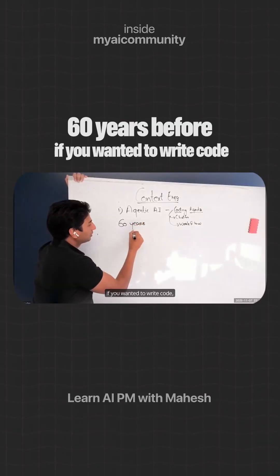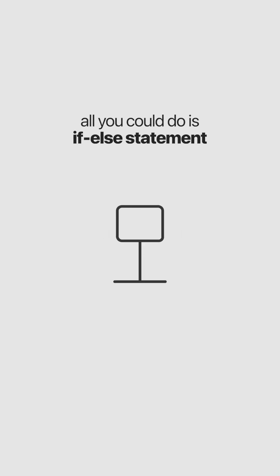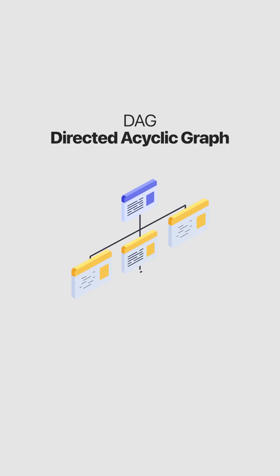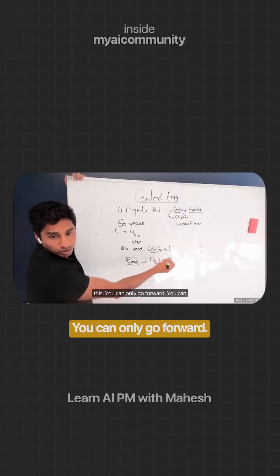60 years ago, if you wanted to write code, all you could do is if statements. Then something came 20 years ago which is called DAG - Directed Acyclic Graph. What does that mean? You can only go forward.